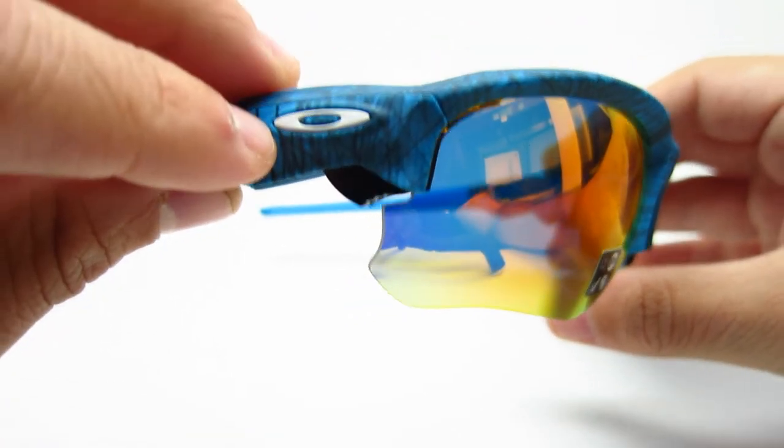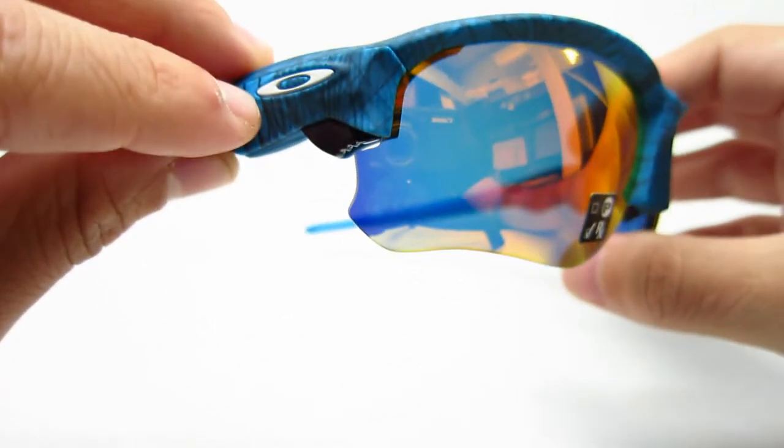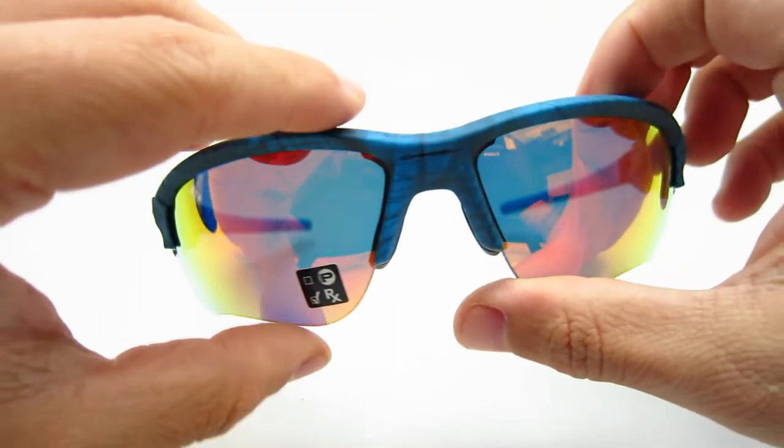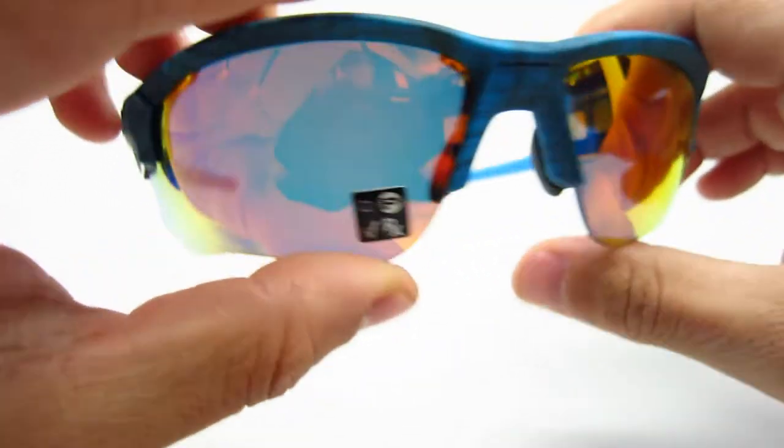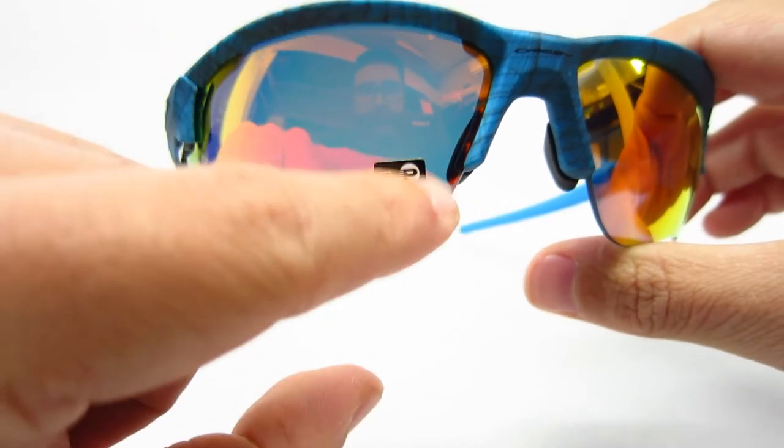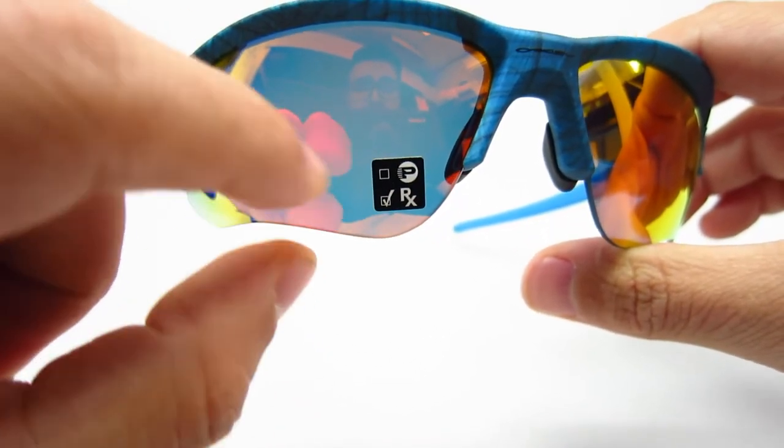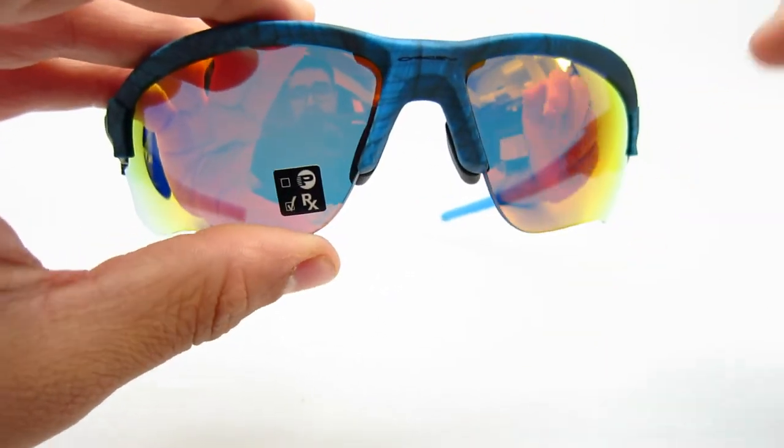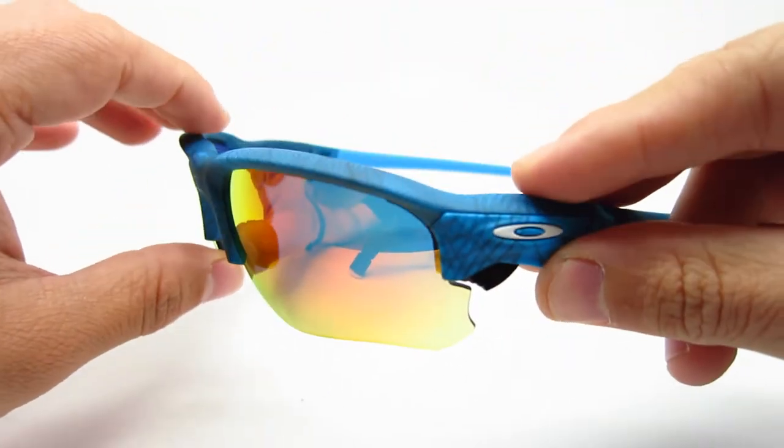The icons on the sides are in white. And the sticker over here, if the P is a tick that means it's polarized. This particular one is not polarized. Most do say are flexible so you can put your prescription in here.